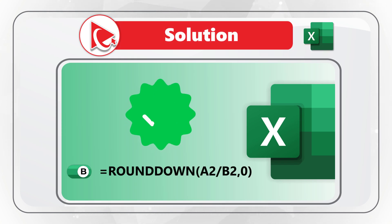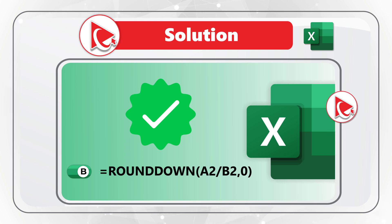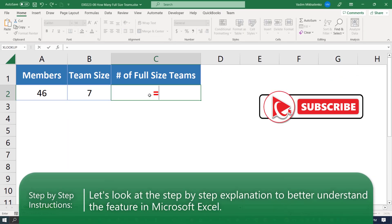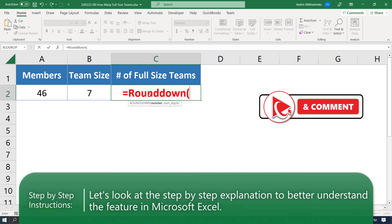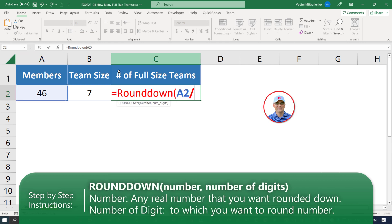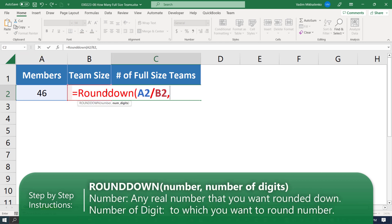I believe the correct answer is choice B, ROUNDDOWN. To solve this challenge we need an Excel formula that rounds the number down to the nearest integer. Using the ROUNDDOWN formula, it rounds a number down towards zero. We supply the arguments A2 divided by B2, and the second argument — indicating how many digits to round down to — is zero.